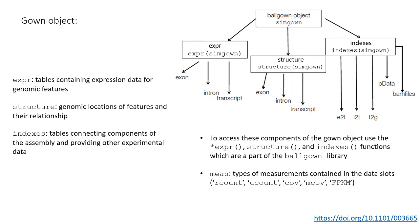In order to access these three components of the gown object, the ballgown package has three functions which take the gown object as an input. For each function, you can specify what unit of measure you'd like to display using the mesh parameter.